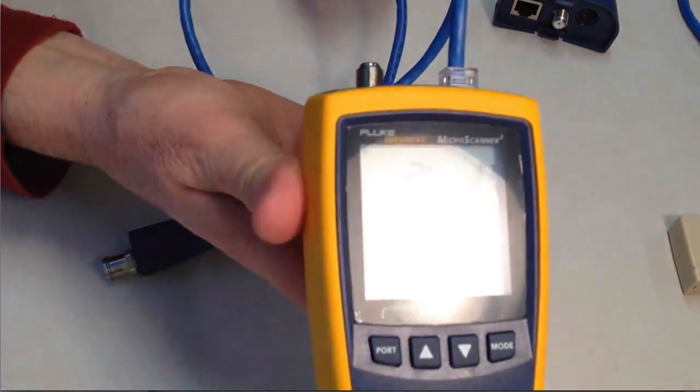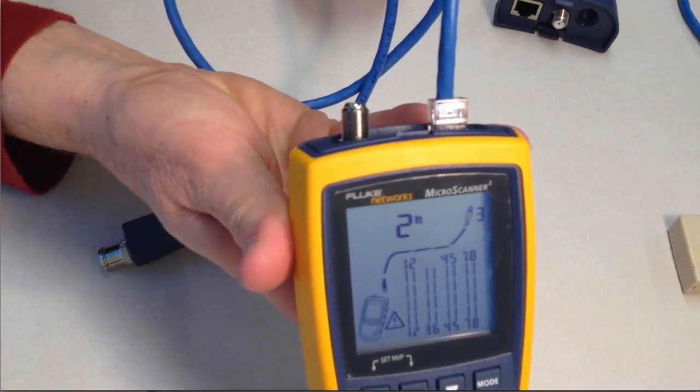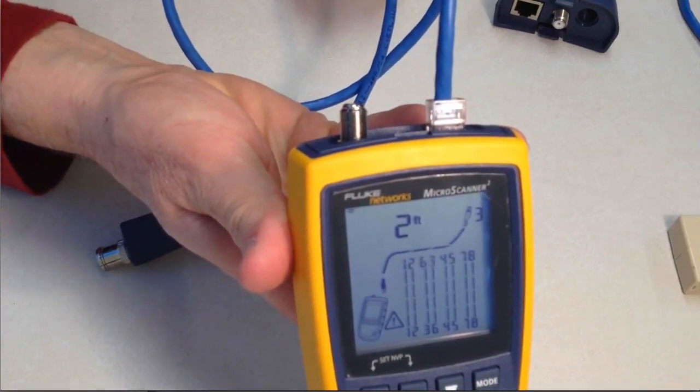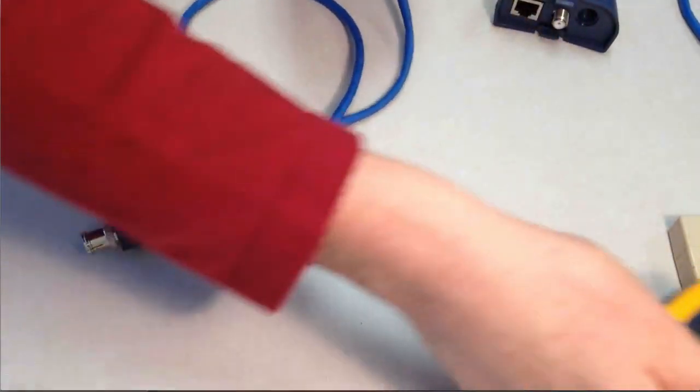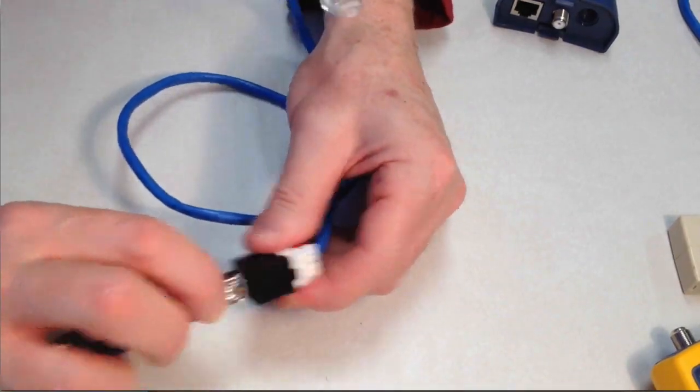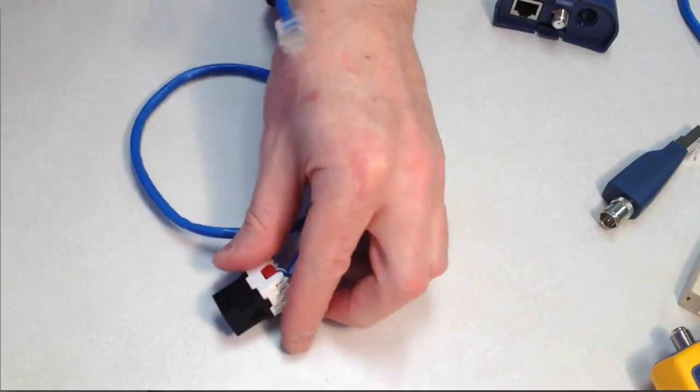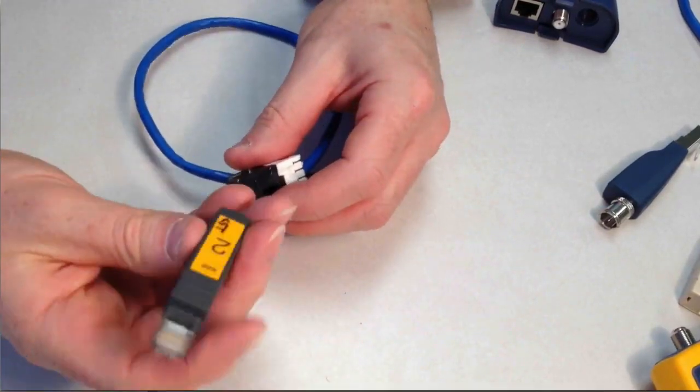And that ID tag was number 3. And you can see we've got a wiring error. In the second pair, 6 and 3 are reversed. So this is a bad cable. It does pick up the ID, but it does show there's a wiring error with that cable. So that would not be serviceable. So we'd have to find out where the wiring error is made.